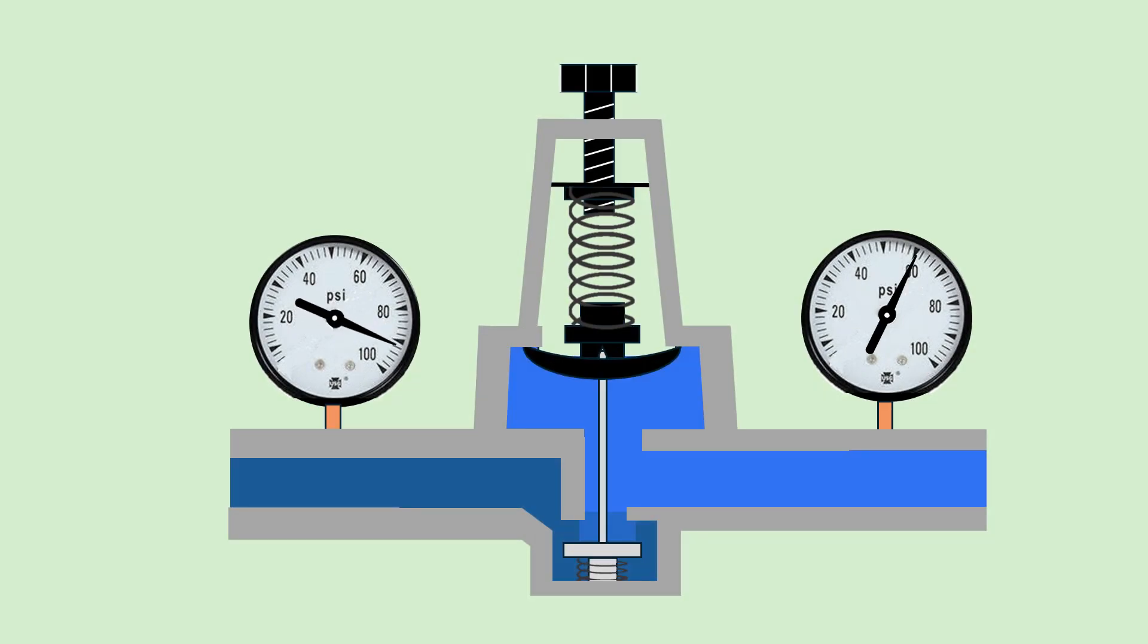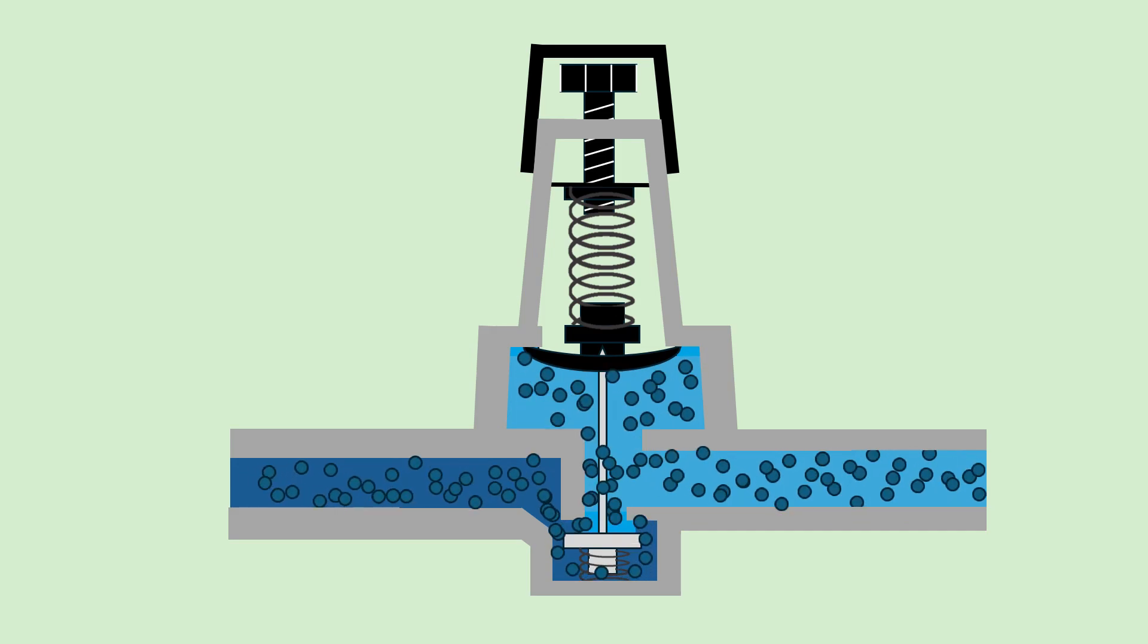So that's basically it. This is how a pressure regulator works to maintain a steady pressure to our homes. It's a simple but ingenious device designed to help protect our home's plumbing systems. Not all homes have these, but many do. So now you know how they work.